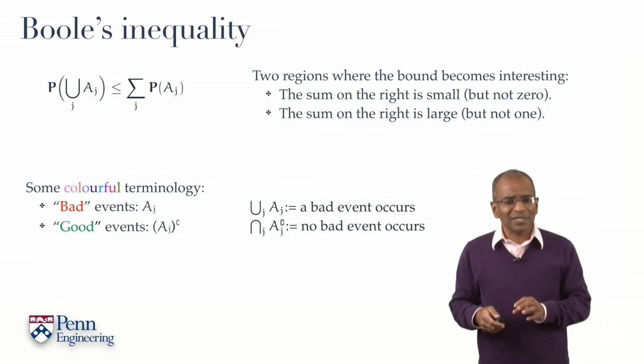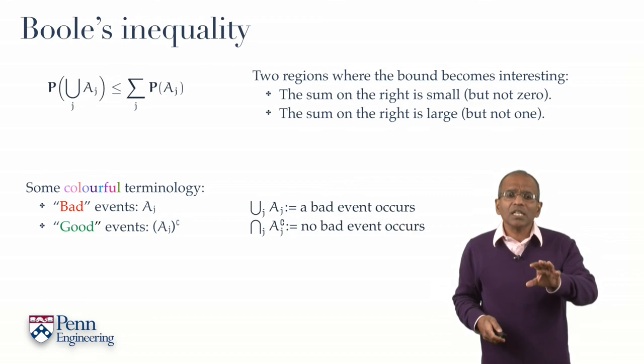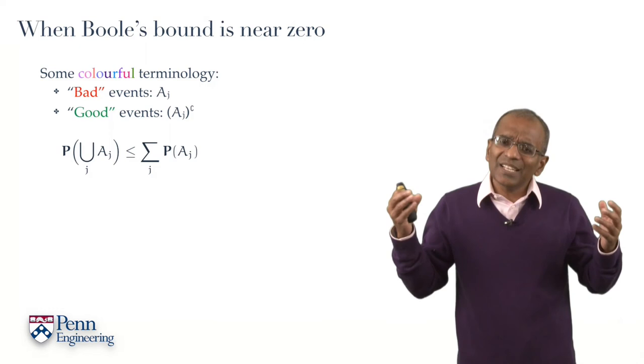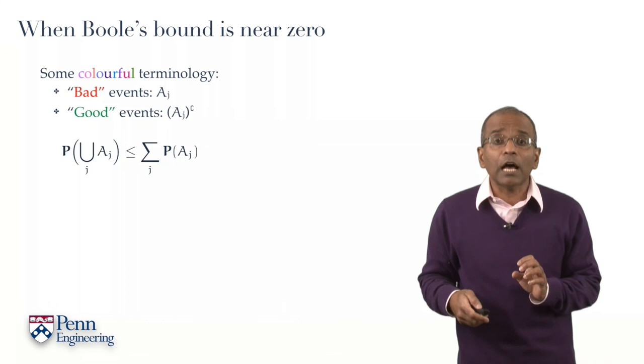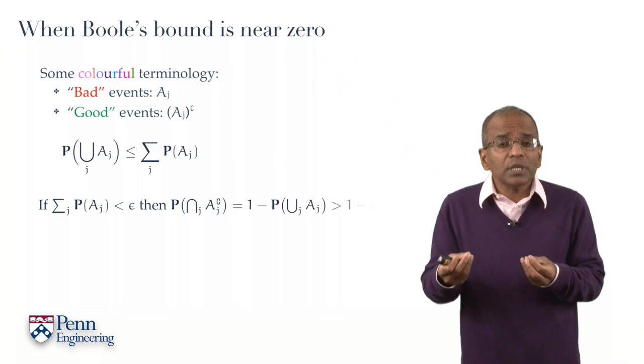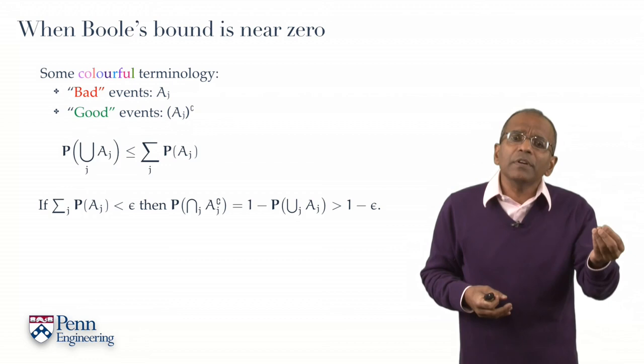So let's start with the setting that we're familiar with. What if Boole's bound is near zero? Now, we can immediately conclude that if the right-hand side is small, then the left-hand side is sandwiched between zero and a small number. And therefore the left-hand side is immediately small.